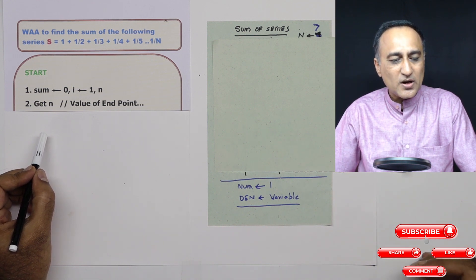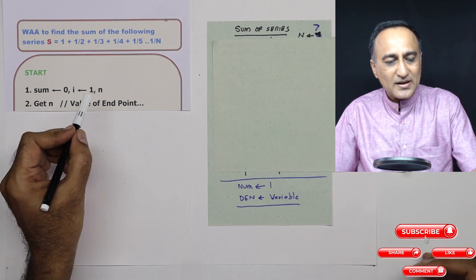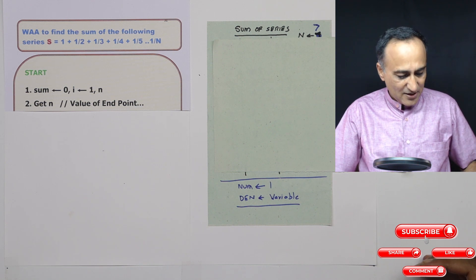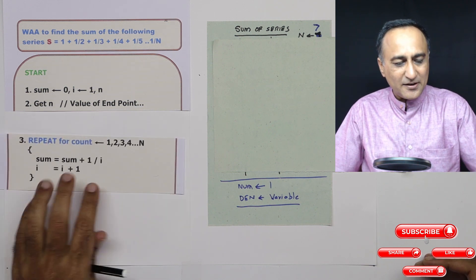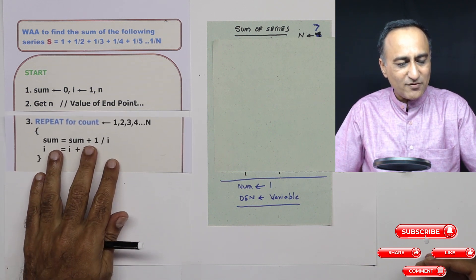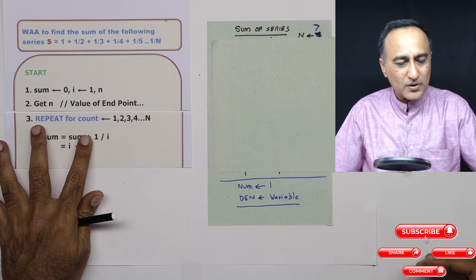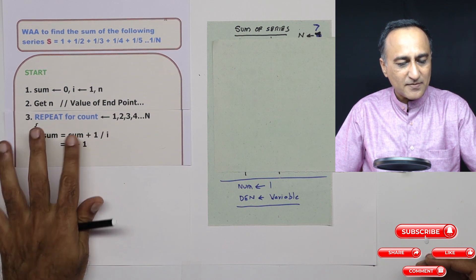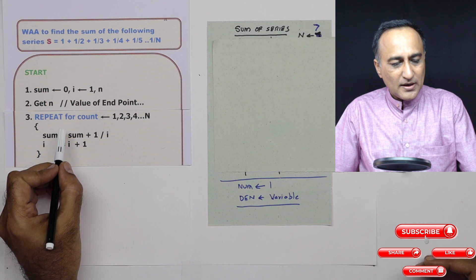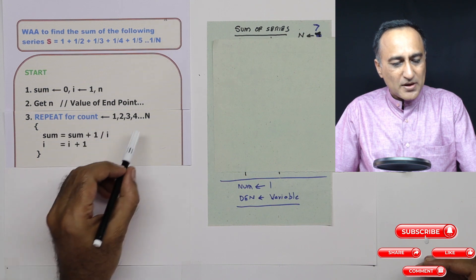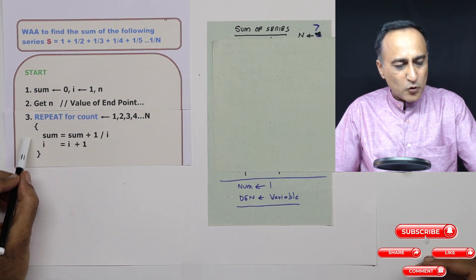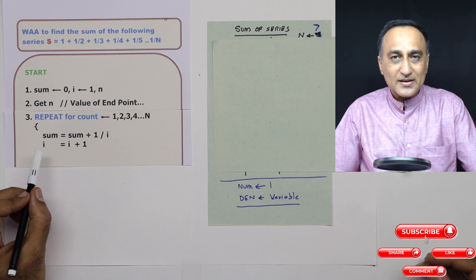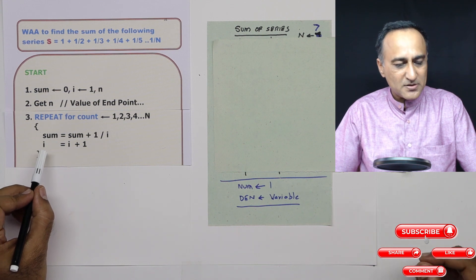This process will continue till the count of n is done. Take a look at this repeat-for structure, and then we will go ahead with the explanation and the dry run. Based on the value of n, I am going to execute this particular block n number of times.